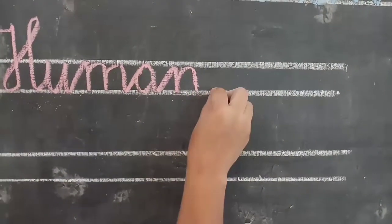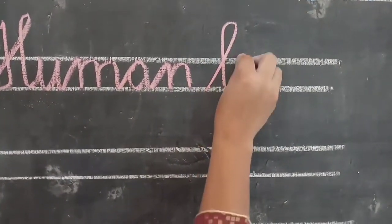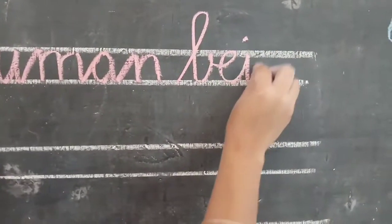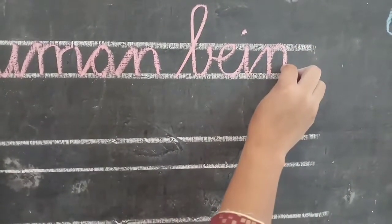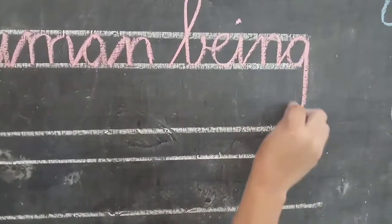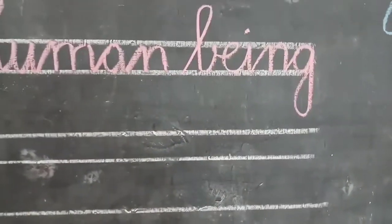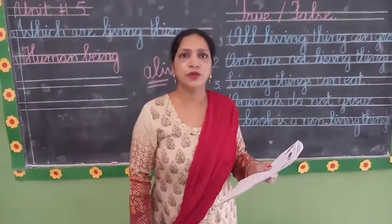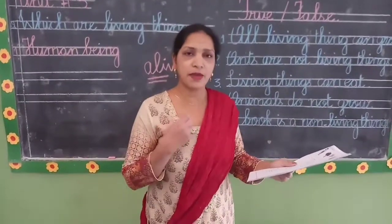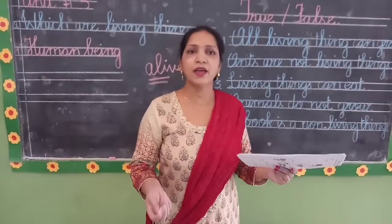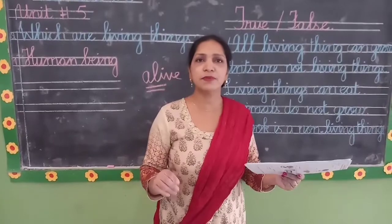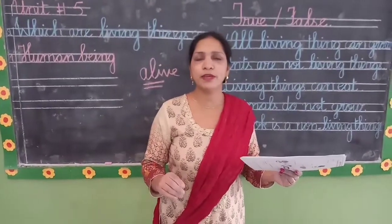Take one finger space and write beings — B-E-I-N-G — human beings. Human beings jiasse ke me aho, aap hain, aap ki mama, baba, bhen bhai — sab yeh jo hai, meh sab ke sab human beings mein aatei hain.